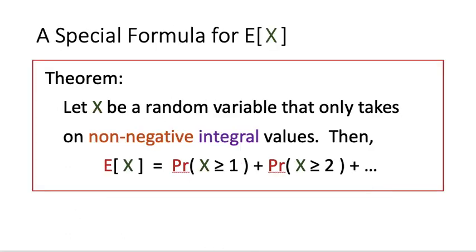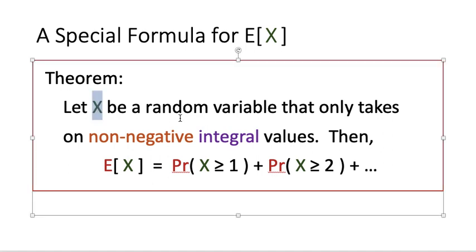For the second proof, we rely on a special result for the expected value of X. Let me introduce this result first. I'll call this a special formula for E[X] — it is not generally true; we need X to be very special for this formula to hold. Specifically, X must be a random variable that can only take on non-negative integer values.